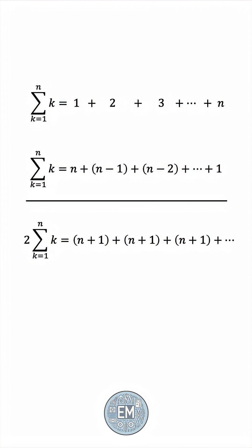Meaning that we have n pairs, each of which add up to n plus 1. In other words, this becomes n times n plus 1.